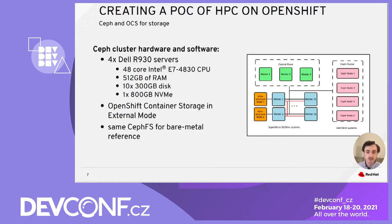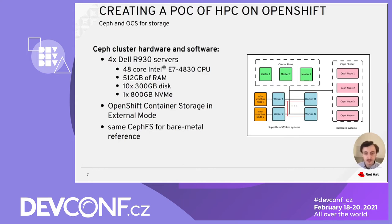The Ceph cluster was running on four Dell servers with 48 cores, 512 gigabytes of RAM, one 800-gig NVMe, and several 300-gig disks. It's worth noting that the performance of the workloads — GROMAX and SPECFEM 3D GLOBE — is not dependent on file system performance, and benchmarking the file system itself was not part of this effort. Ceph offers a scalable, flexible, and reliable storage solution, which is easy to use on OpenShift thanks to OCS.